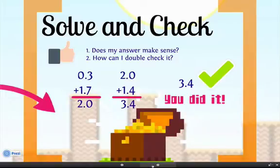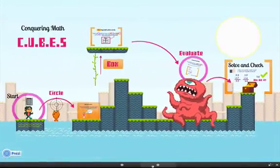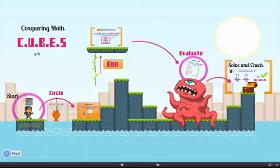Go back into your problem. Add 1 and 7 tenths back. Then, add 1 and 4 tenths back. You should come up with 3 and 4 tenths. There you go. You did it. You solved and checked. Using cubes is really simple.